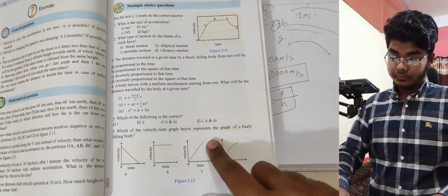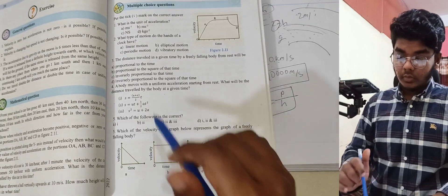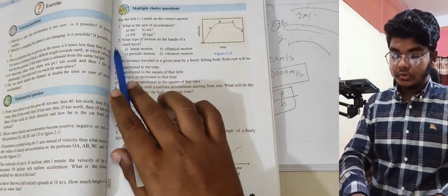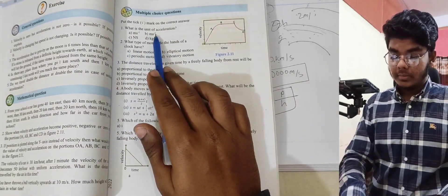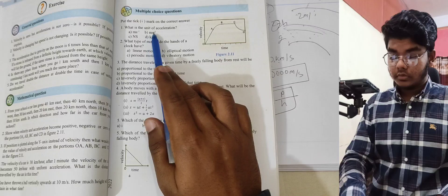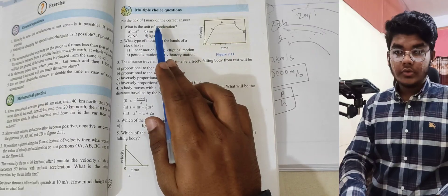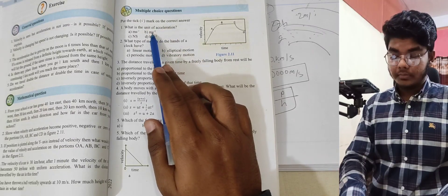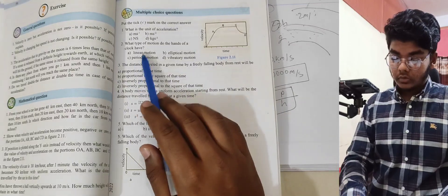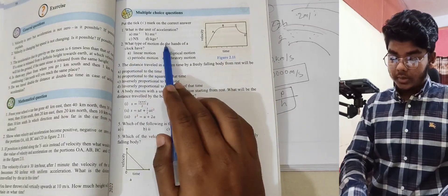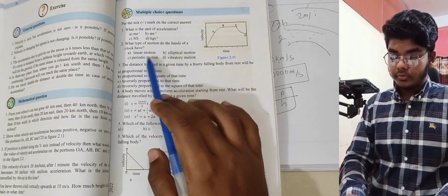Quick review questions: What is the unit of acceleration? — Meter per second squared, which is the change of velocity with time. What type of motion do the hands of a clock have?